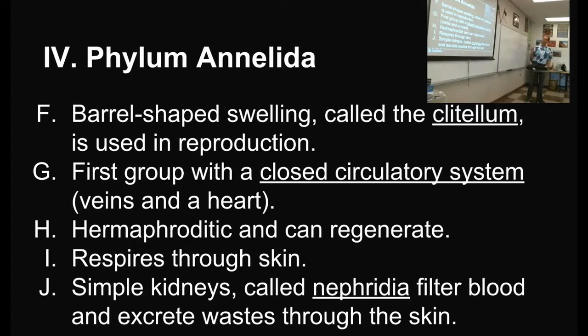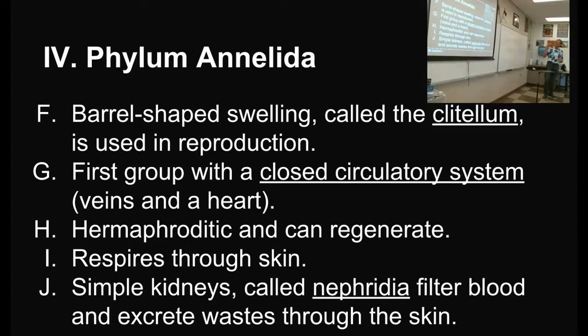When they have mated with another worm, they both wind up getting fertilized in the process. The clitellum secretes a waxy sort of material that they lay their eggs in, and then they crawl out of it — you get what's called a casting. That's a wax-looking case that holds the eggs, and the earthworm eggs will develop in that. So the clitellum secretes the structure that holds and protects the developing eggs.